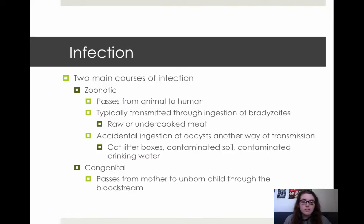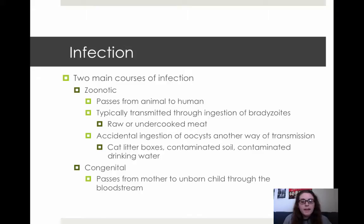There are two main courses of infection. It's either zoonotic, where a human gets it directly from an animal source. This can be through ingesting bradiozoites, which are typically from undercooked meat, and accidental ingestion of oocytes from cat feces — so you can get this from a litter box, or if you're working in a garden that has feral cats excreting their feces in it, or from contaminated drinking water.